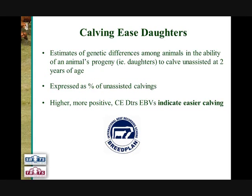The Calving Ease Daughter EBV, on the other hand, estimates the genetic differences in the ability of an animal's — either a sire or a dam — daughters to calve themselves unassisted at two years of age. The Calving Ease Daughter EBV is expressed similarly as the percentage of unassisted calvings. If looking to select an animal where the ease of calving in his or her daughters is of importance, then higher, more positive Calving Ease Daughter EBVs would be more beneficial.